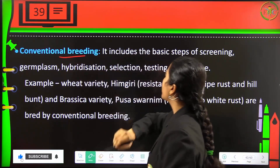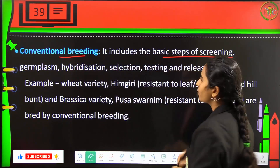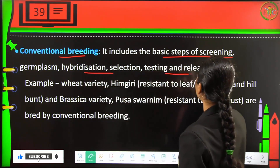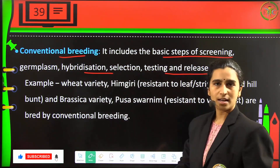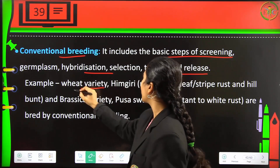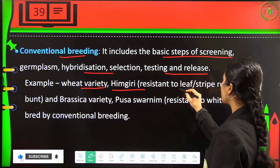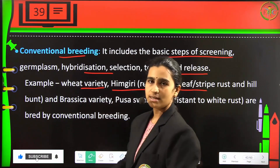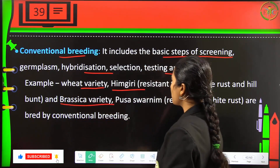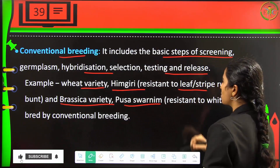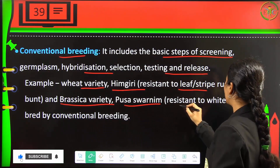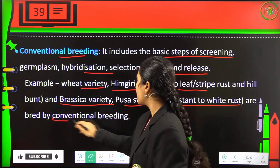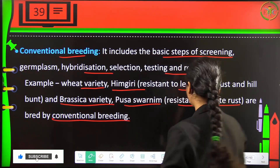Conventional breeding includes the basic steps of screening germplasm, hybridization, selection, testing, and then release. An example is the wheat variety Himgiri, which is resistant to leaf rust, stripe rust, and hill bunt. The Brassica variety Pusa Swarnima is resistant to white rust — both bred by conventional breeding techniques.